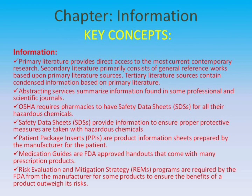Key Concepts. Primary literature provides direct access to the most current contemporary research. Secondary literature primarily consists of general reference works based upon primary literature sources. Tertiary literature sources contain condensed information based on primary literature. Abstracting services summarize information found in some professional and scientific journals.